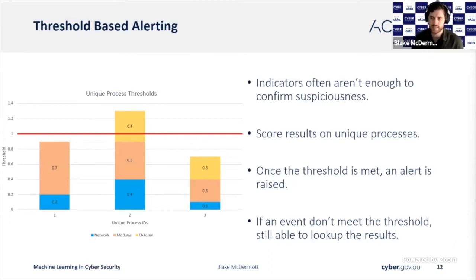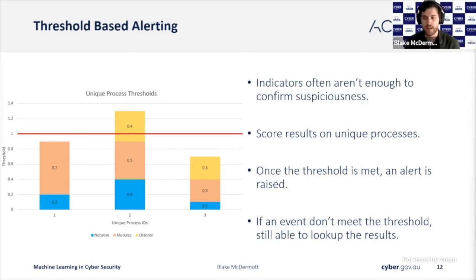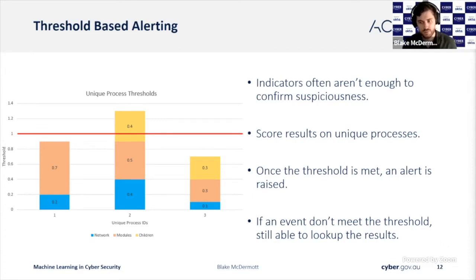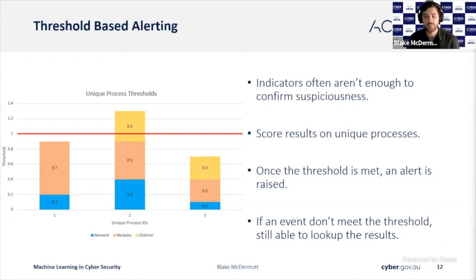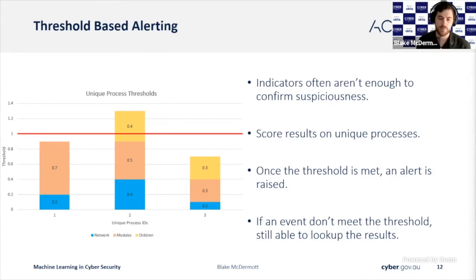Often a specific model isn't enough to confirm that something is suspicious. We can utilize the scores given by each model to create a threshold-based alerting system, storing results on unique processes. The suspiciousness score can link suspicious activities between multiple models. As you can see in the diagram, while a middle process did not show any inherently high scores in a single model, when grouped together it is enough to break the threshold. If an investigation leads to a process that didn't alert, we can still look up the scores afterwards to understand why our models did not find it suspicious.